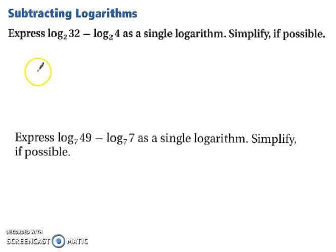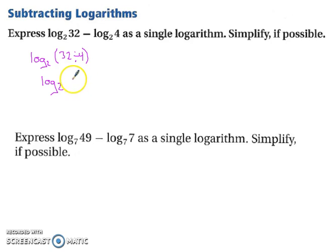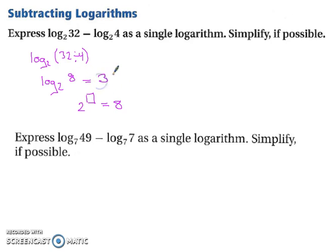Let's practice. We have log base 2 of 32 minus log base 2 of 4. Since we're subtracting logs, we can write it as a single logarithm by dividing. So we have log base 2 of 32 divided by 4, which is log base 2 of 8. This is asking 2 to the what power gives us 8 — that would be the third power, so the answer is 3.